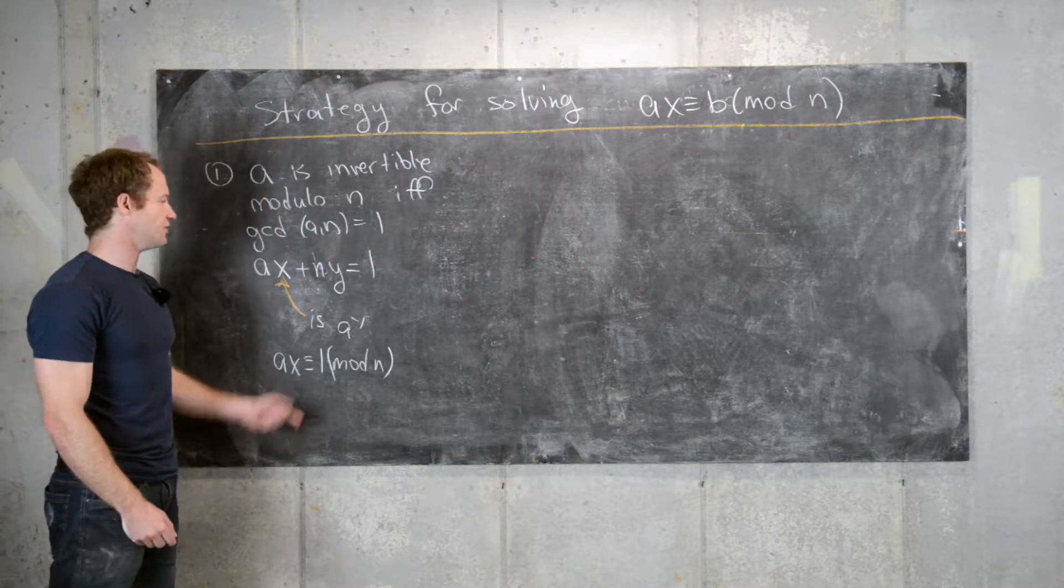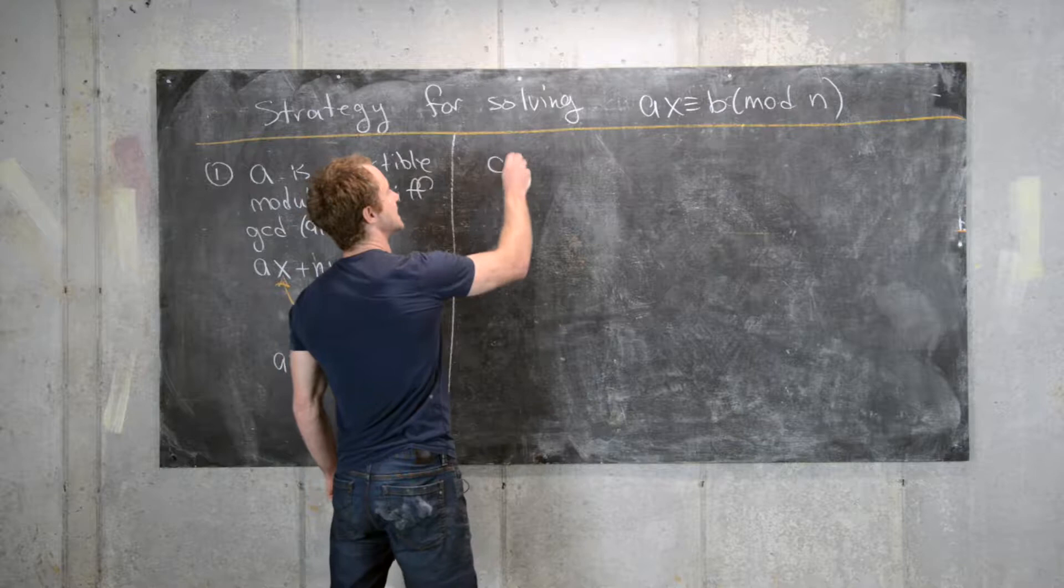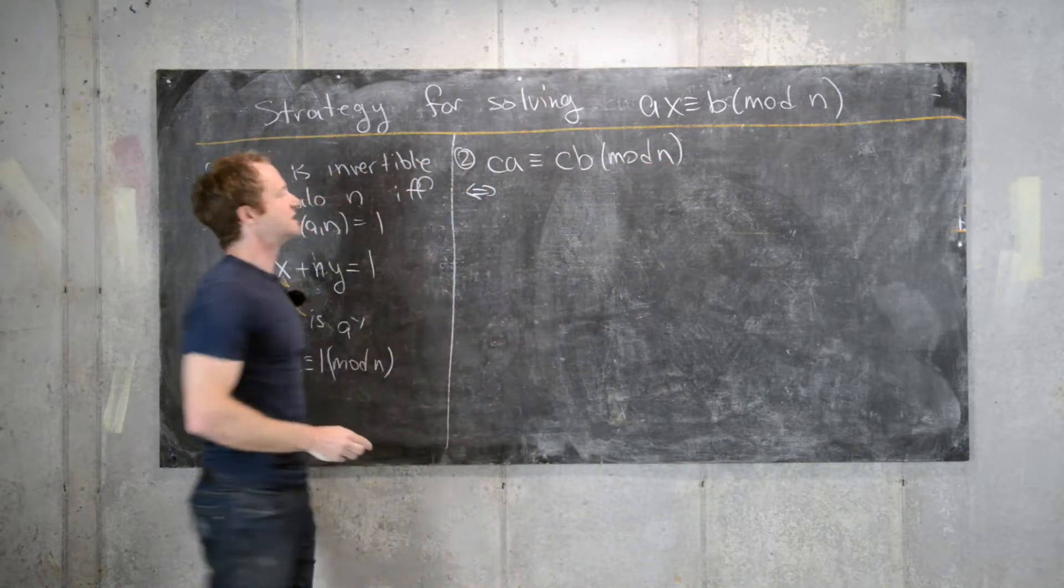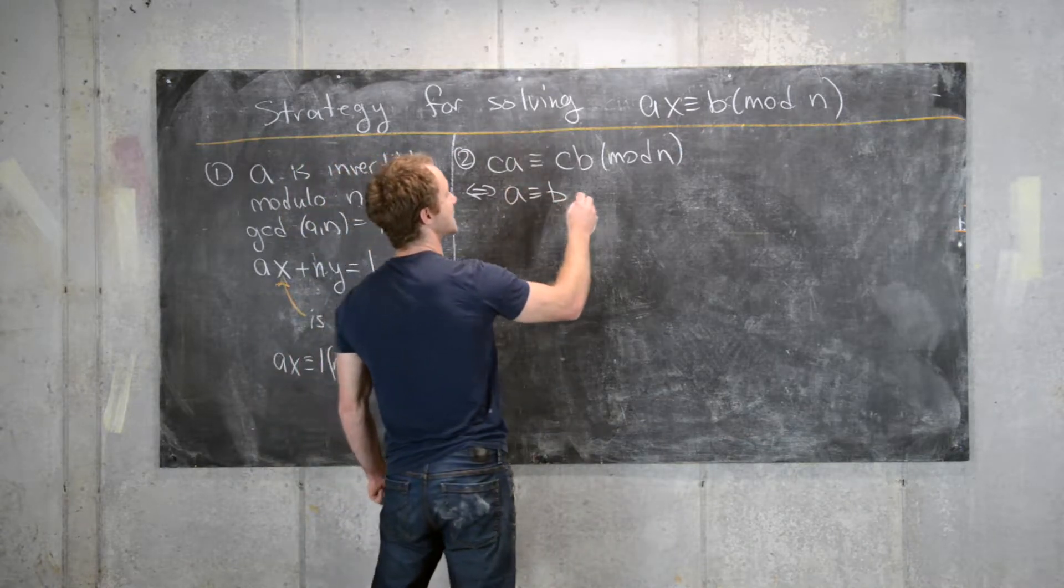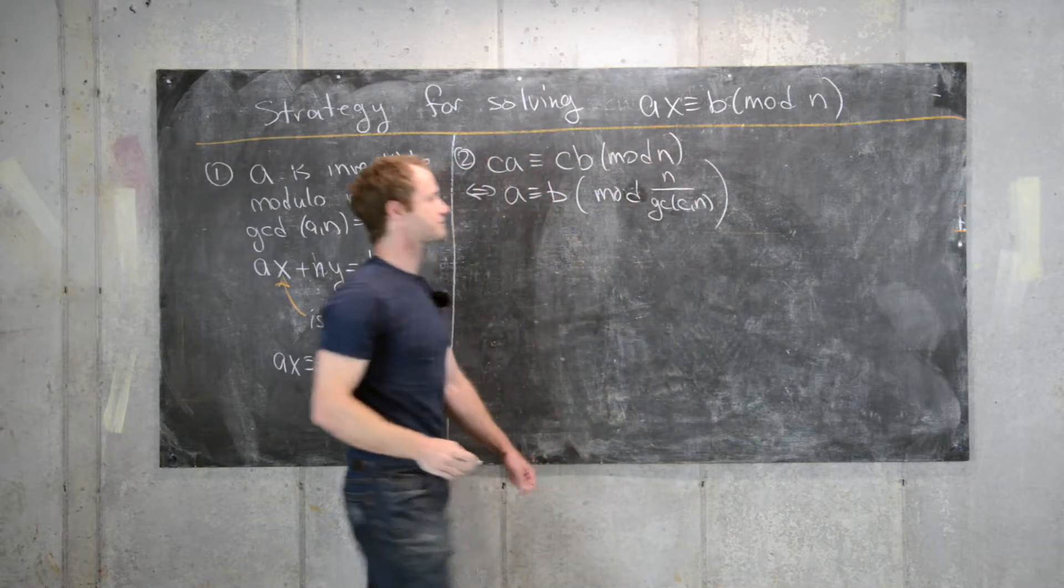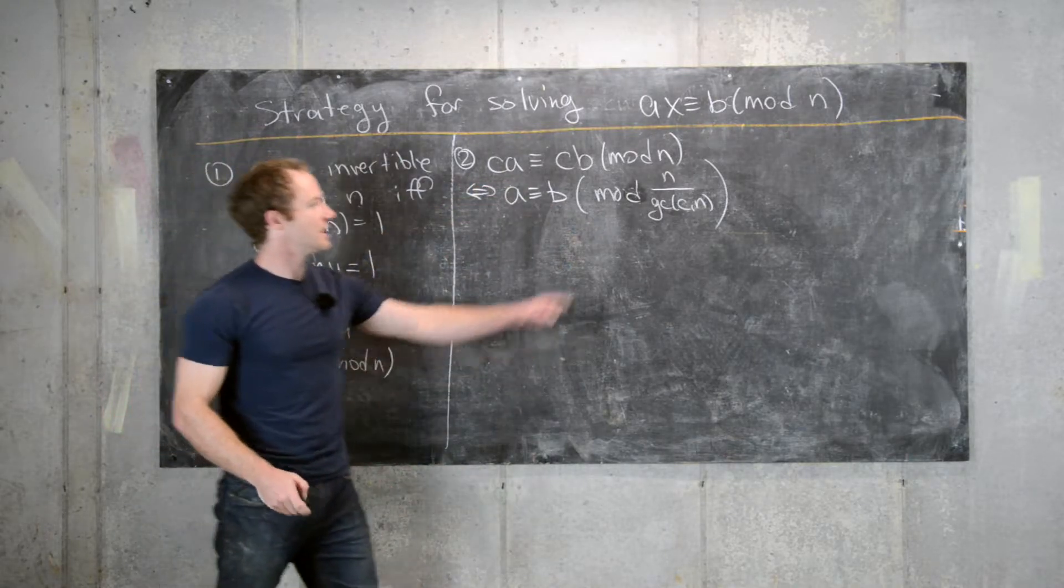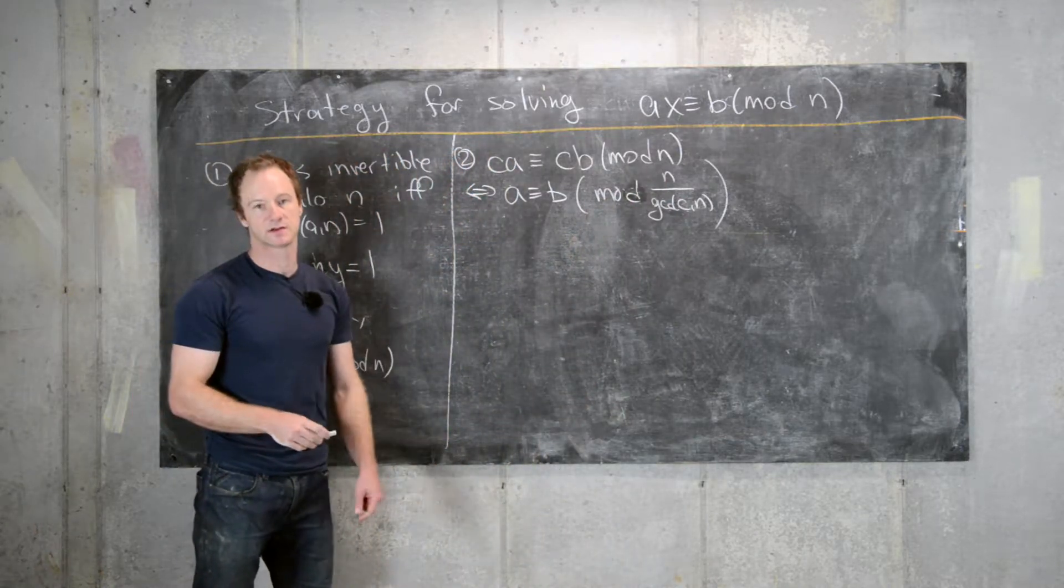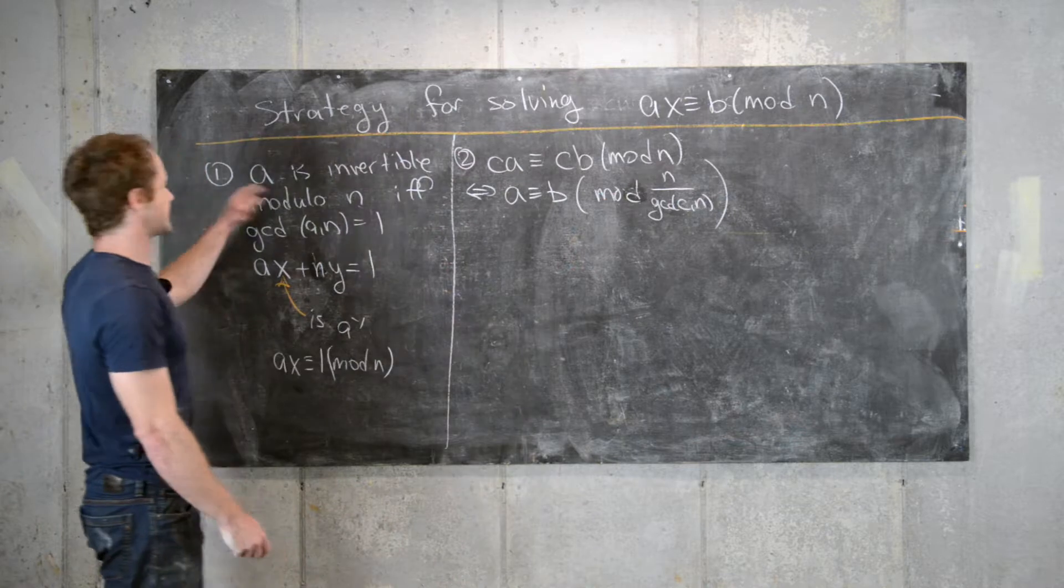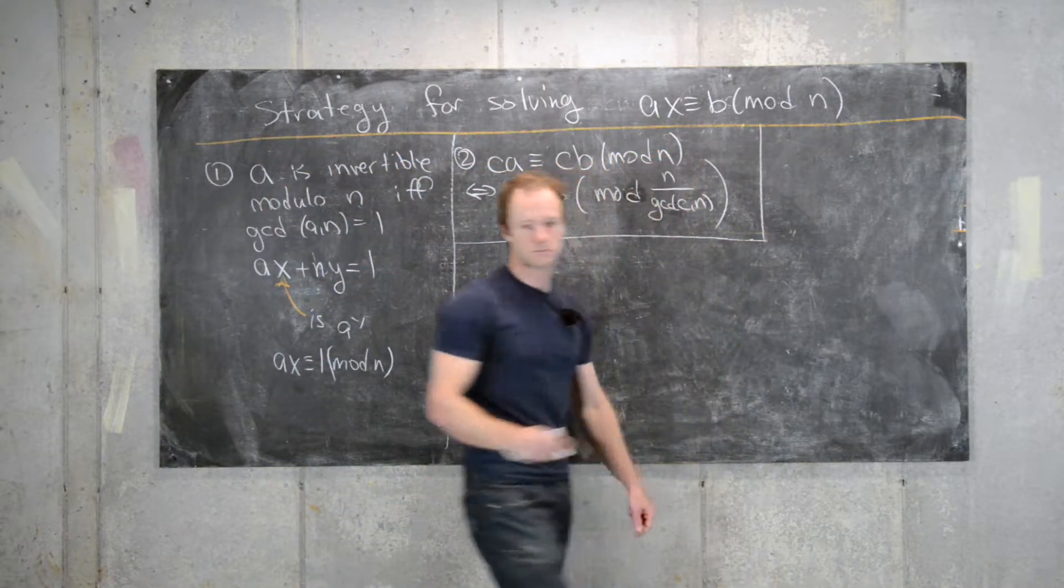So if A is invertible mod n, you can just multiply by the inverse. So the next thing is if you have CA is congruent to CB mod n, this is equivalent to saying that A is congruent to B mod n divided by the GCD of C and n. So in other words, you can cancel the C, but you don't land in the same modular space. So obviously if n equals 1, you do land in the same modular space, and that has to do with something over here, but otherwise you don't.